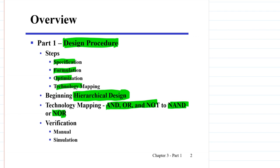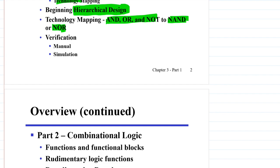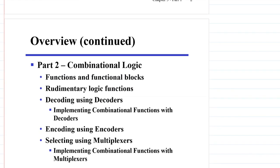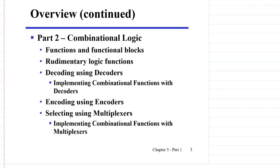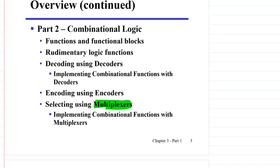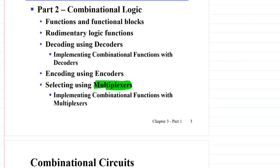We will also deal with verification, whether we can do it manually or using some simulation. In the second part of the lecture on combinational logic circuit design, we will deal with functions and functional blocks, then rudimentary logic functions, decoders and encoders, and afterwards multiplexers. These will be the topics for the second part of the lecture on combinational logic design.